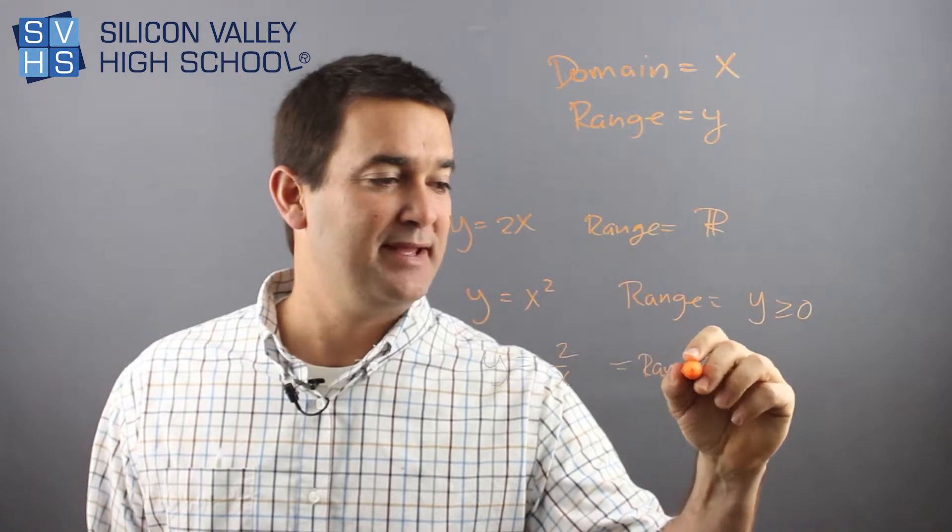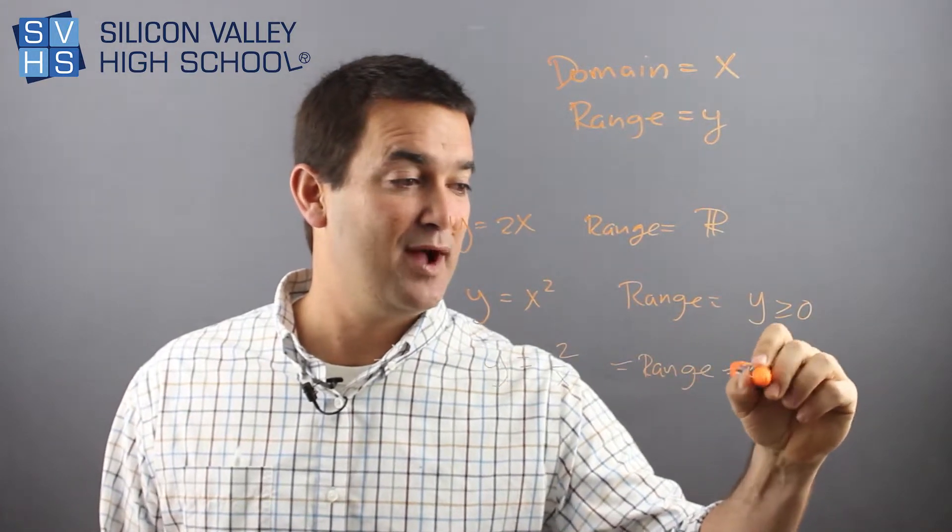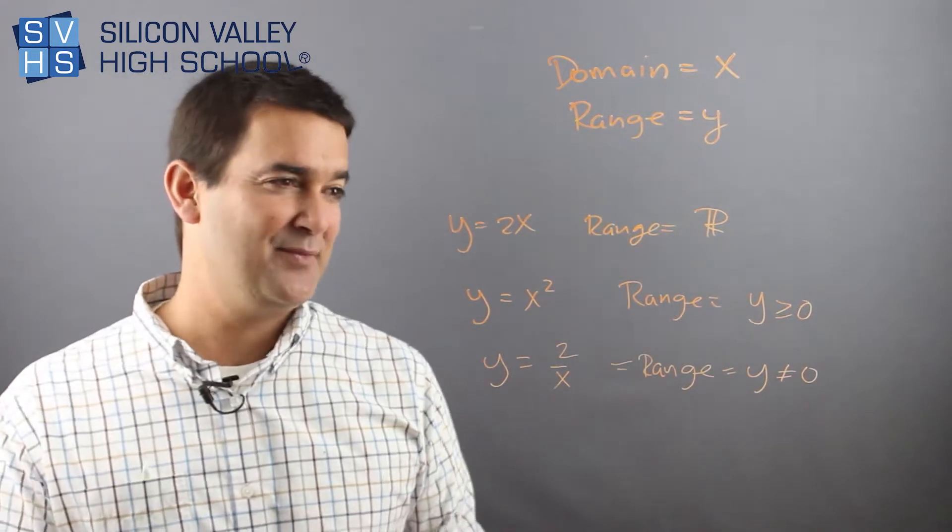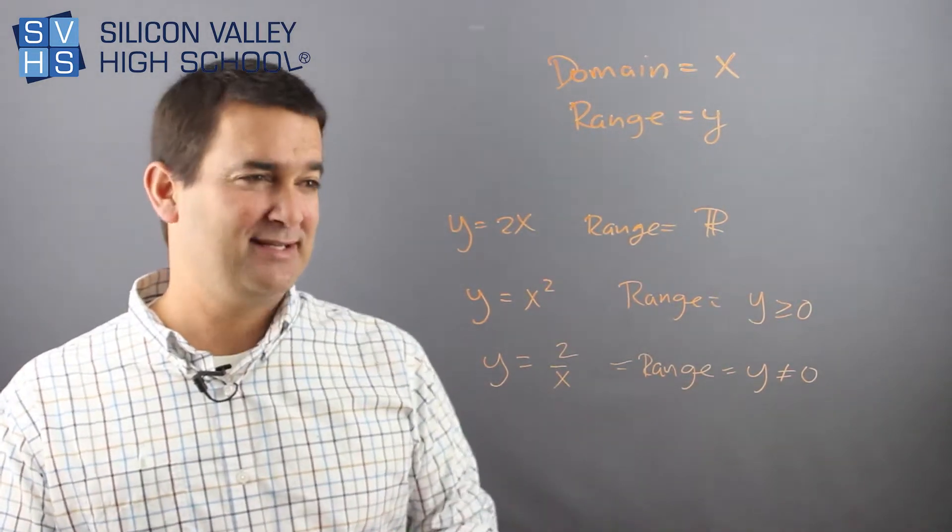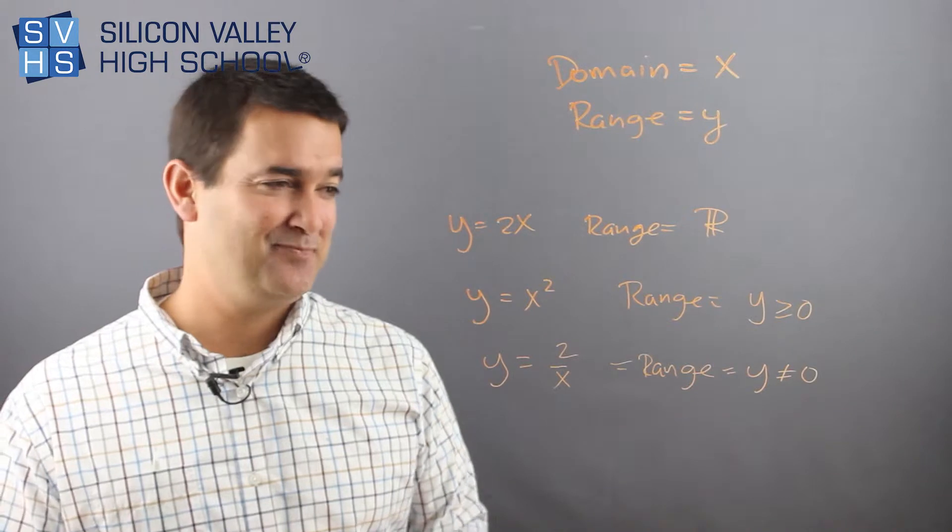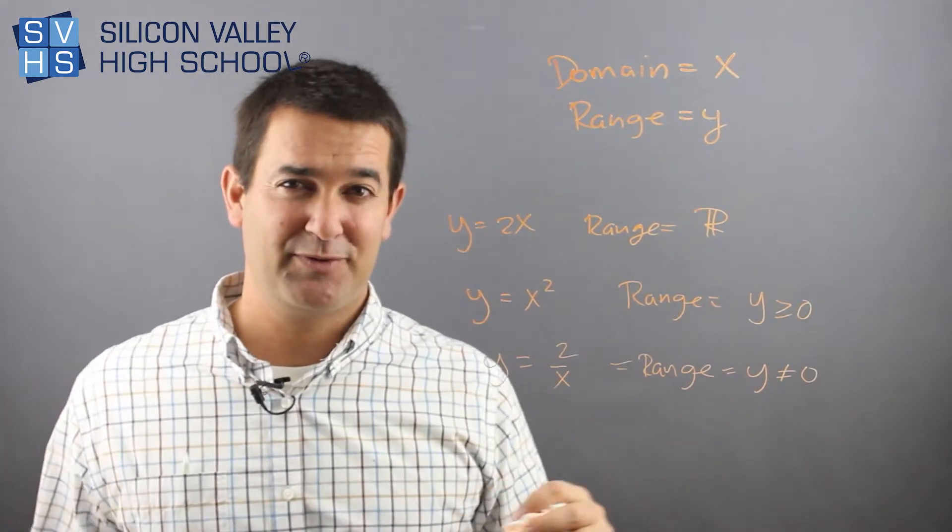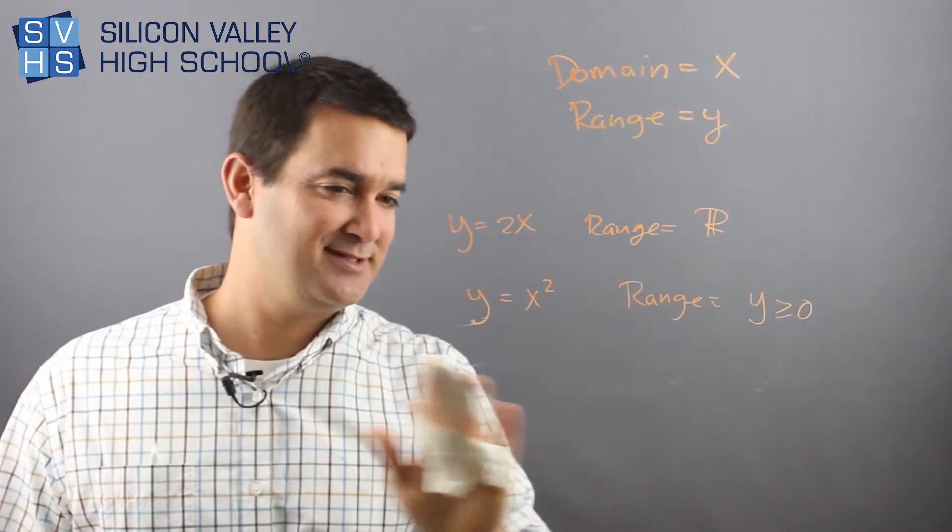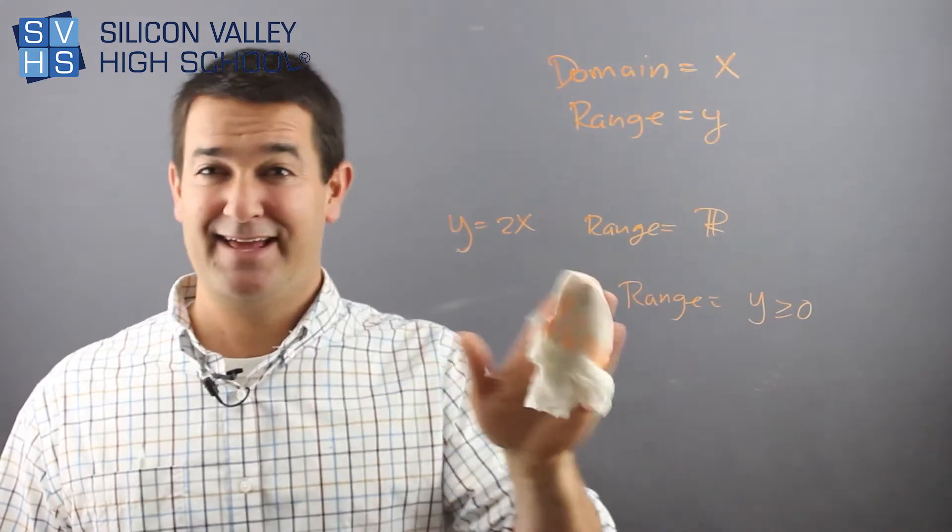You can't have zero in the denominator. So this one, again, range would be everything. It would be Y does not equal zero. So the range is everything except for zero. So I think the take-home message, again, is you have to play with them. I'm going to give you one more scenario that's super weird and pretty common, and then at least you'll have seen the weirder ones in your life, and maybe you'll be more likely to get them right.